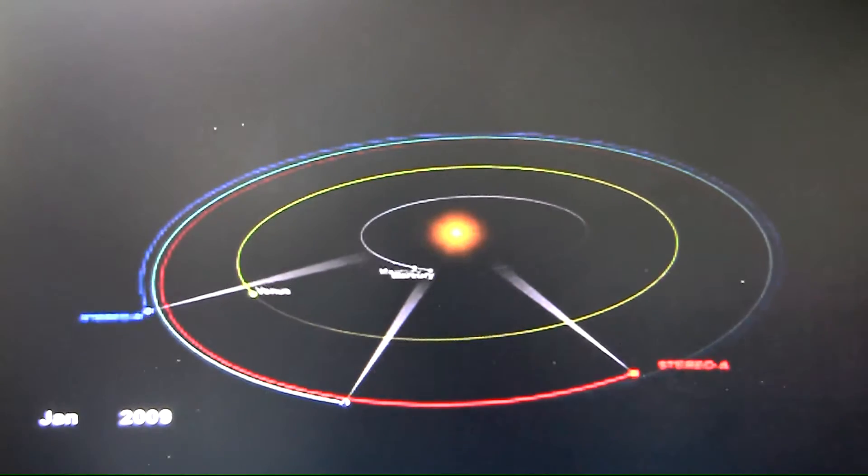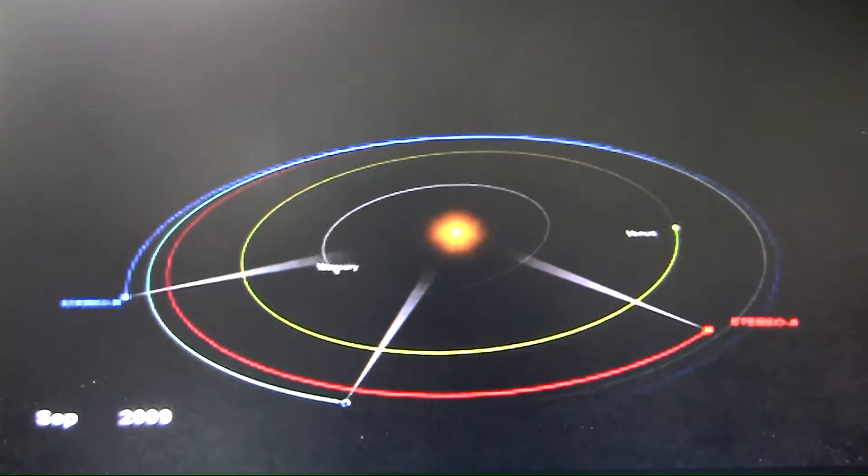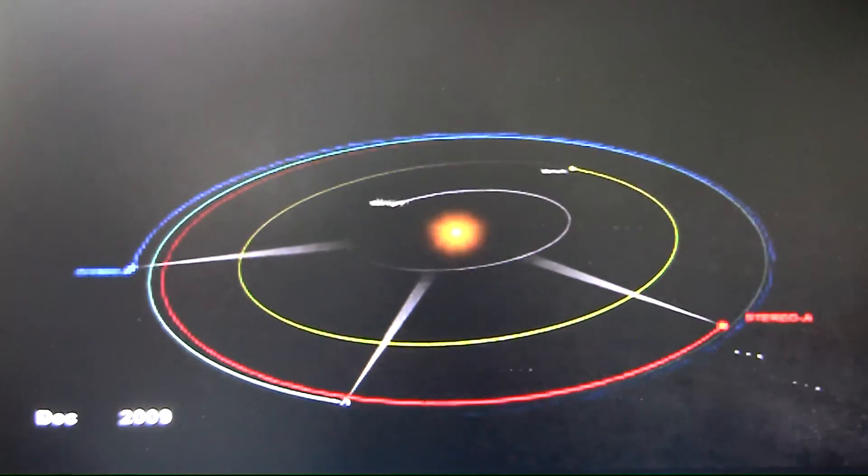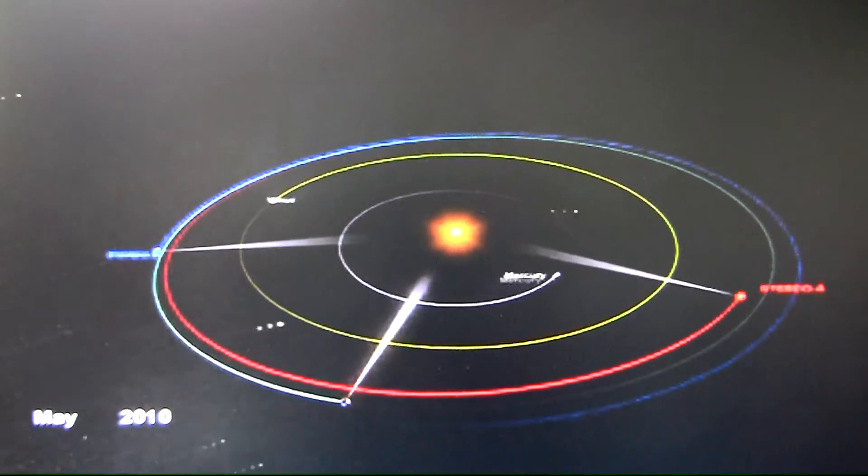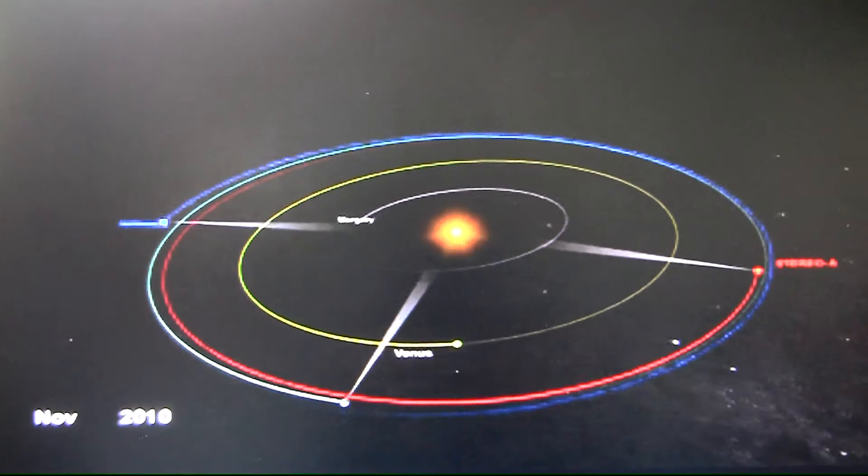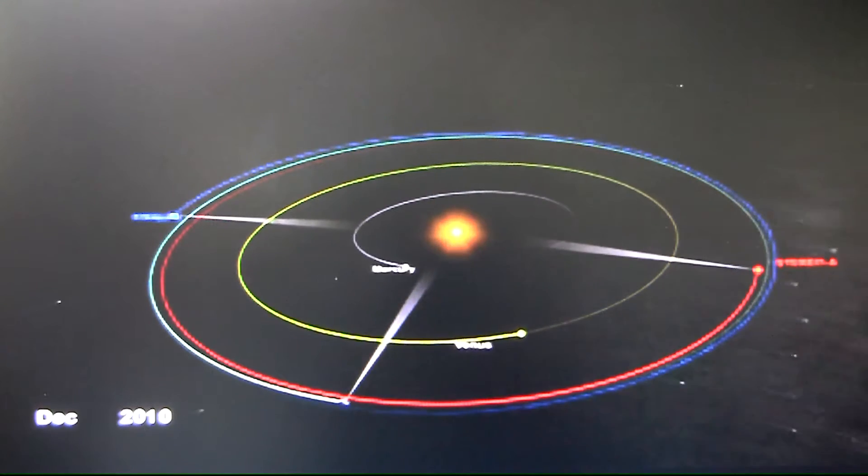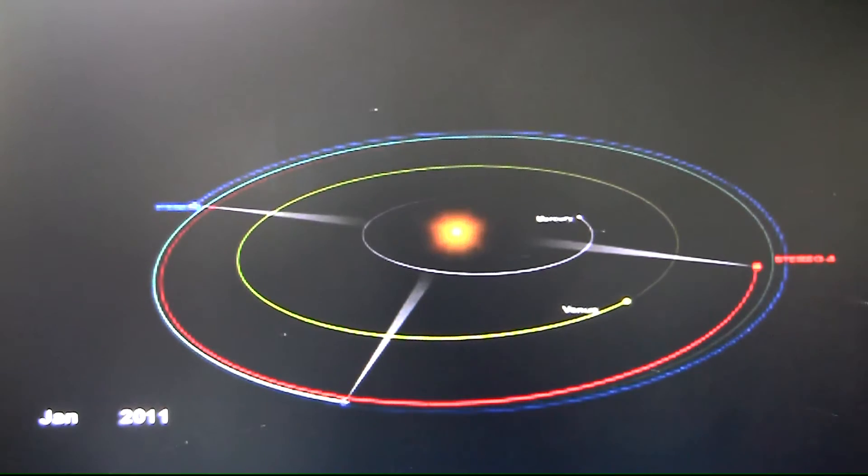As they've separated, our view of the sun has increased. Other satellites near Earth, such as SOHO and now SDO, continue to watch the sun from Earth's perspective, while the STEREO spacecraft see increasingly different views. Now STEREO A and B are almost exactly opposite each other, and for the first time in human history, we have a view of the entire sun.